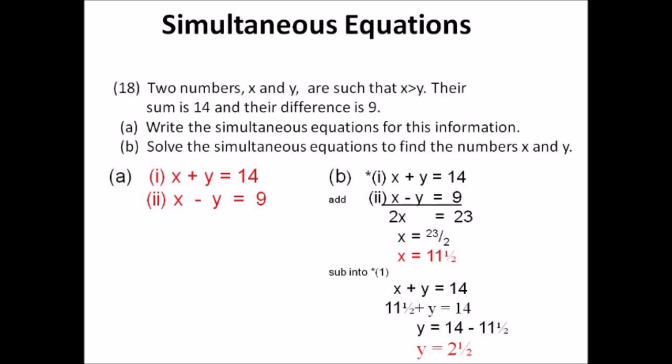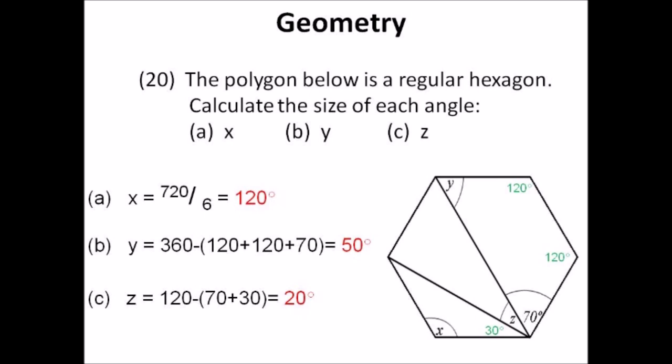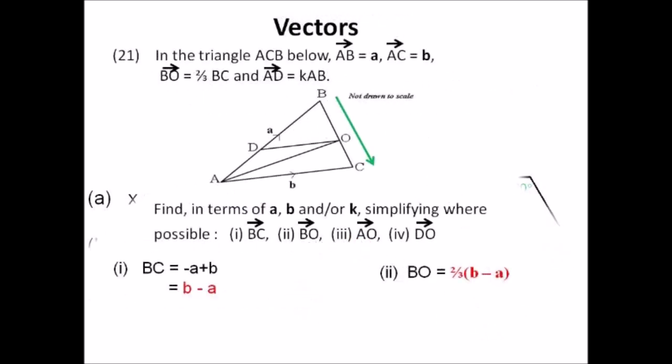Number nineteen: functions. gf(negative 5) requires two steps — the final answer is negative 24. The inverse of g: set x equals 2 minus y, rearrange, then swap x and y to get g inverse equals 2 minus x. Number twenty: regular hexagon. x equals 120 degrees. The interior angles are each 720 divided by 6. y equals 50 degrees and z equals 20 degrees. For the trapezoid, use 120 plus 120 plus 70 subtracted from 360 to find y.